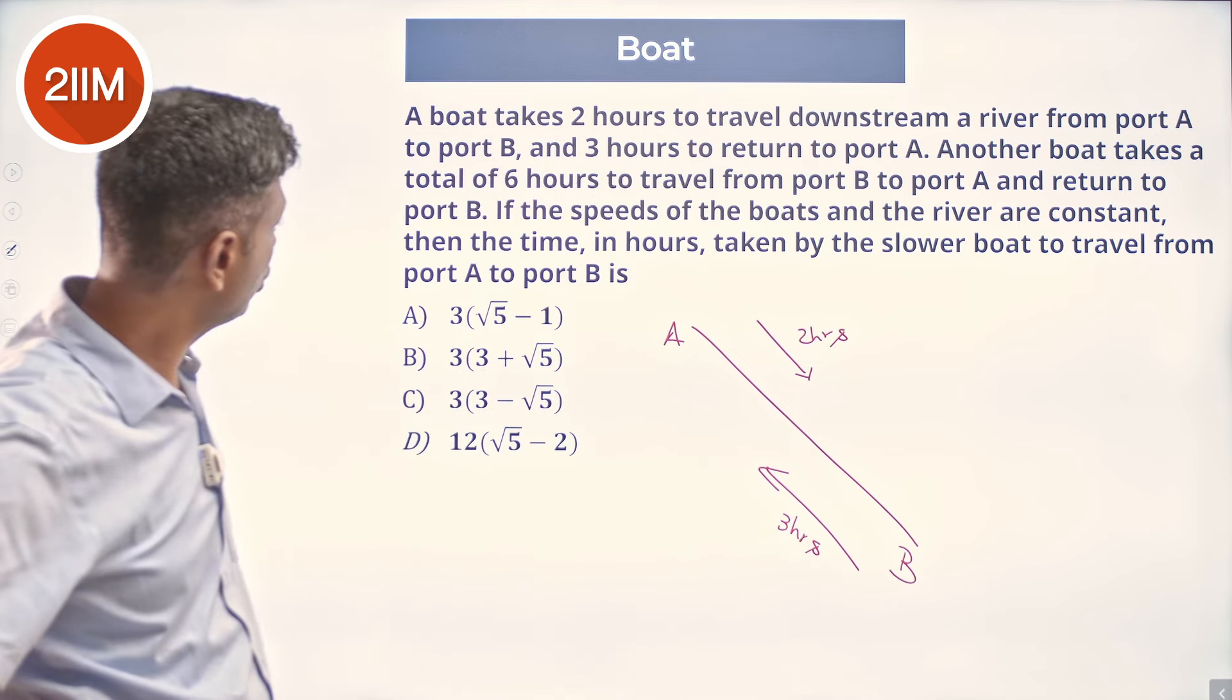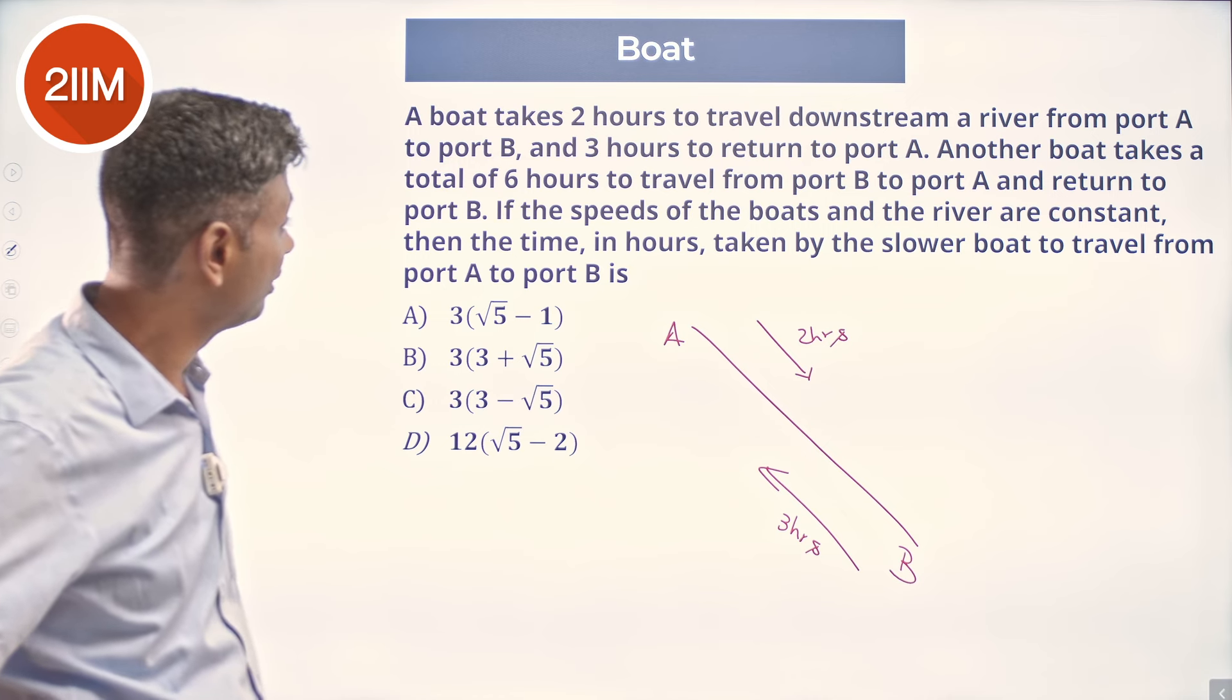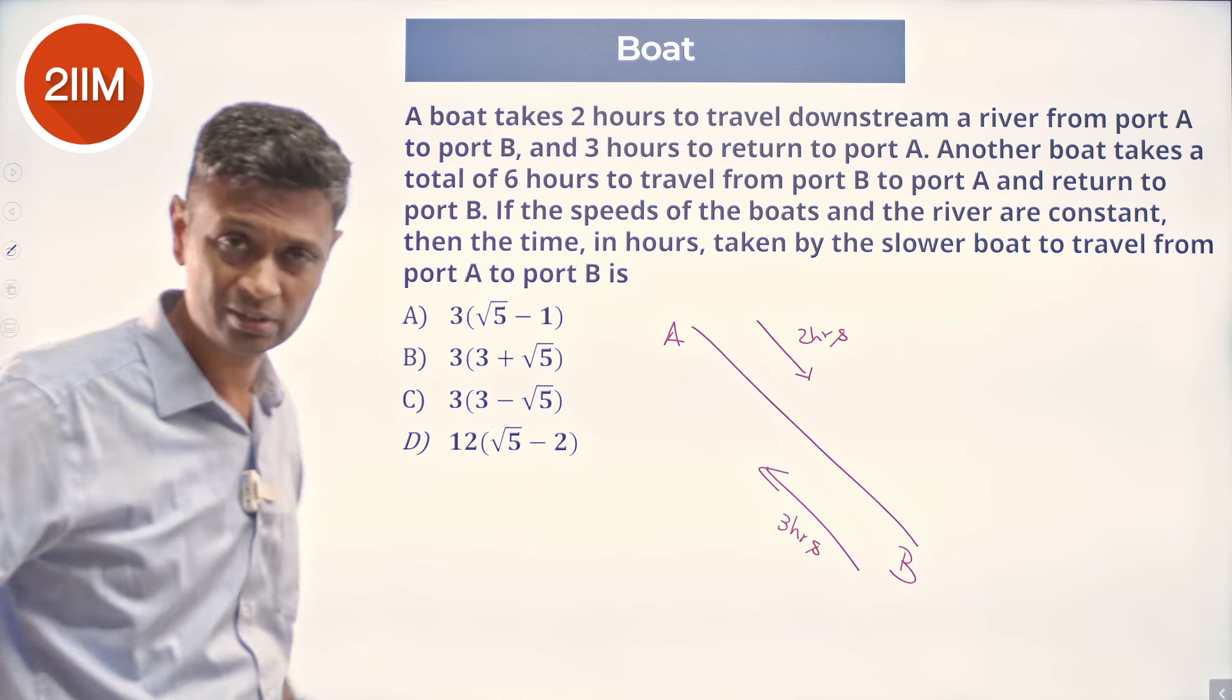So, another boat takes a total of six hours to travel from port B to port A and return to port B. The speeds of the boats in the river are constant and the time in hours taken by the slower boat to travel from port A to port B is what we need to find.